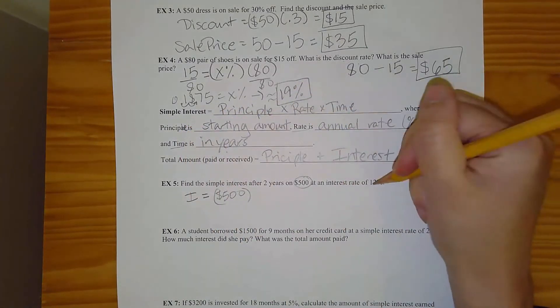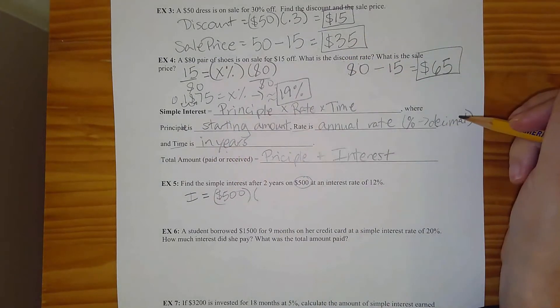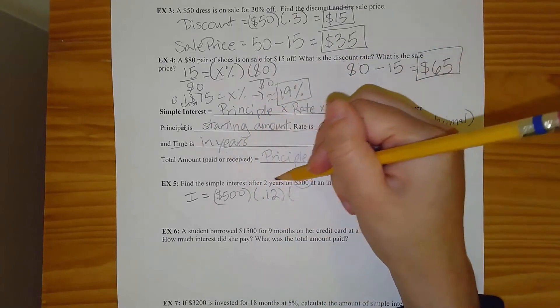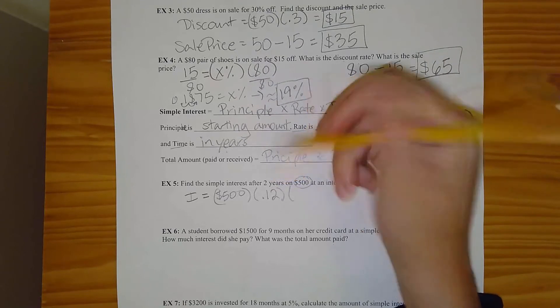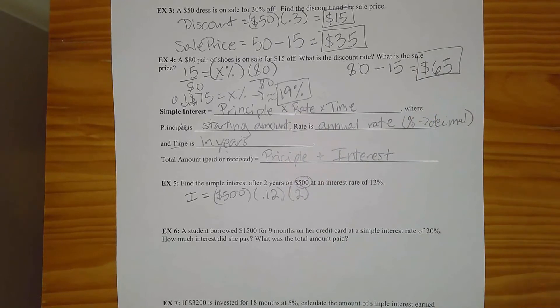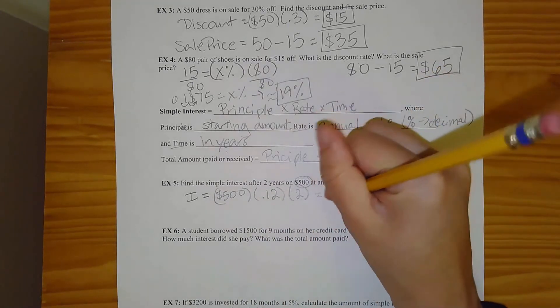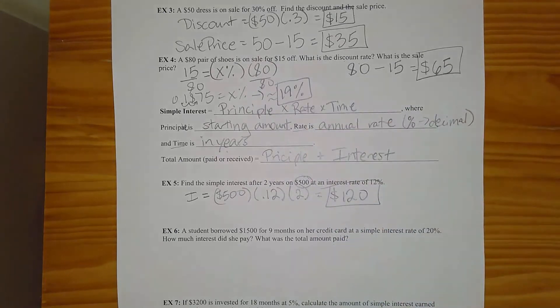Times the rate. Well, my rate is 12%. 12% as a decimal is 0.12 times the time in years. So it's already in years, thankfully. So I'm going to multiply by two. So that's two years. If you multiply those together, 500 times 0.12 times two, you should get $120.